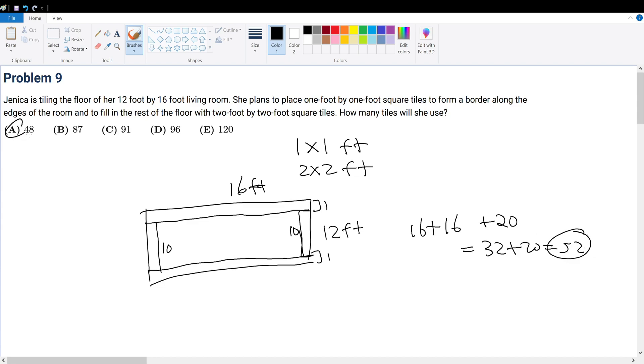So let's cross out A because that's less than 52. But what is the side lengths for this interior segment of the living room? This square tile is 1. That square tile is 1. So this is a 10 by 14.